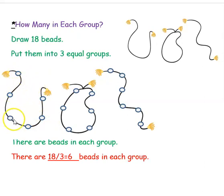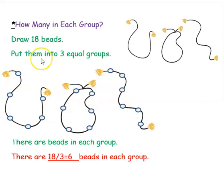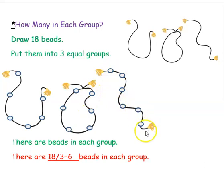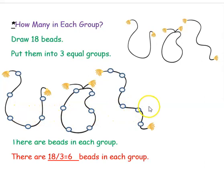Let's count: 1, 2, 3, 4, 5, 6 — 1, 2, 3, 4, 5, 6 — 1, 2, 3, 4, 5, 6. So totally there are 6 beads in each of the 3 groups, and totally we should have 18 beads: 1 through 18. So totally we have 18 beads. If you put 18 beads into 3 equal groups, then there are 6 beads in each group.